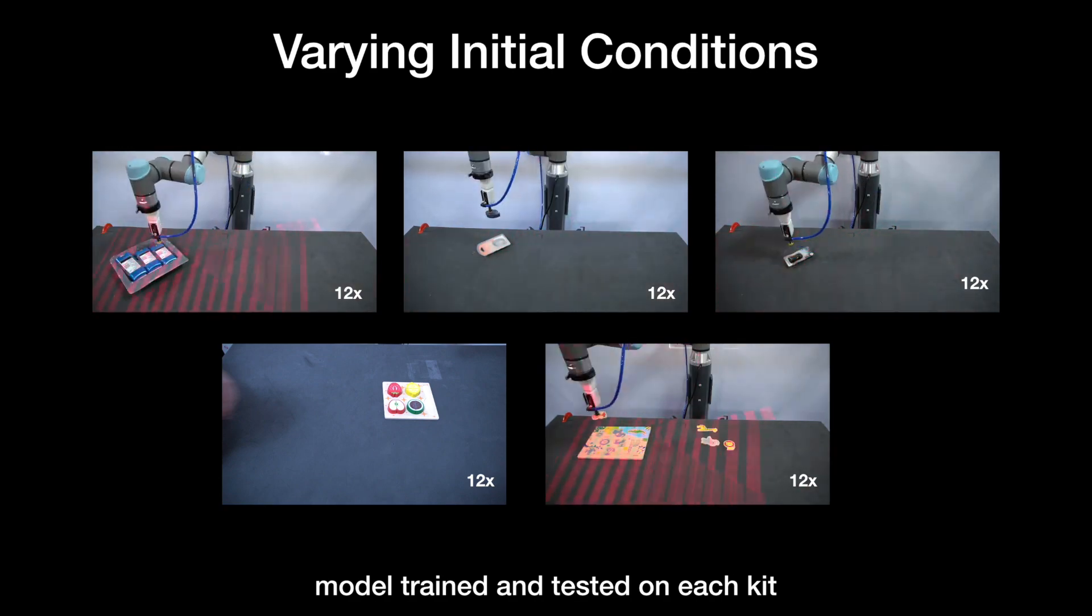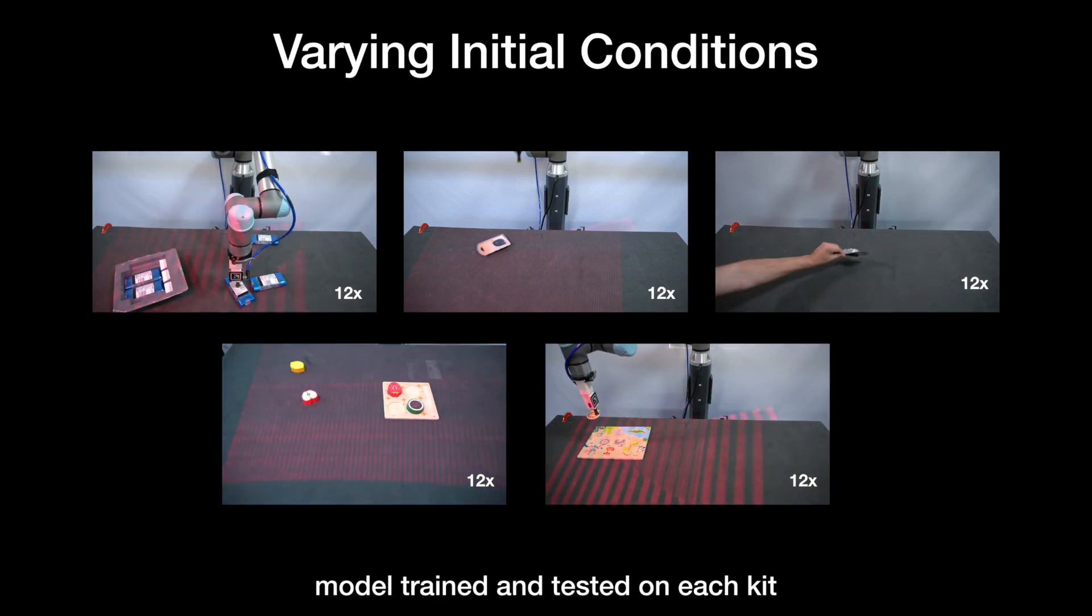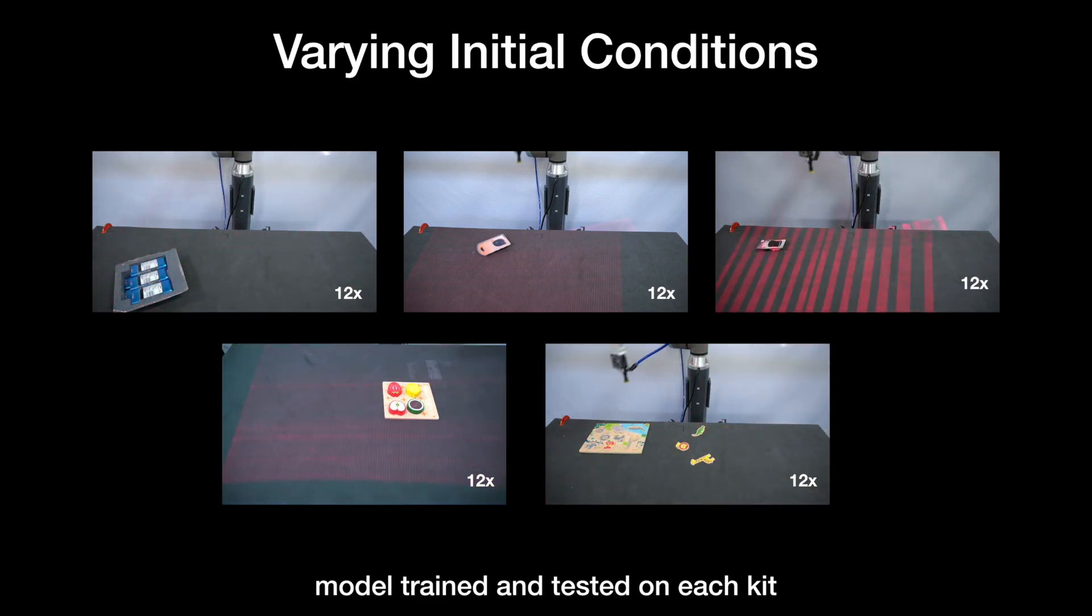However, during testing, we exposed it to randomly sampled positions and orientations of the kit. We find that our learned policy is able to achieve over 90% assembly accuracy on new and challenging poses as shown here.